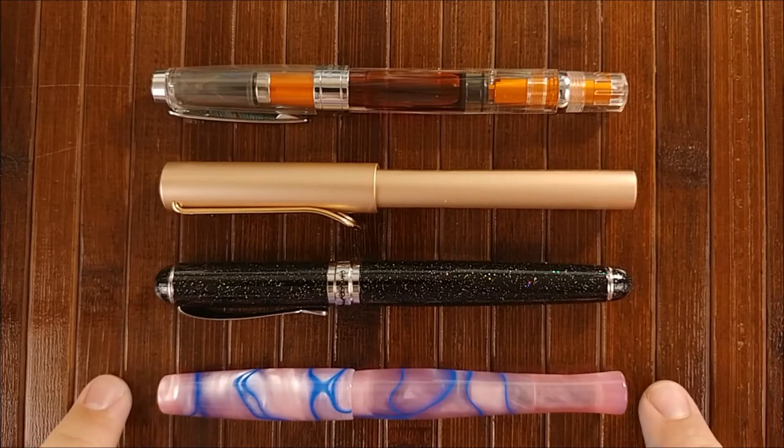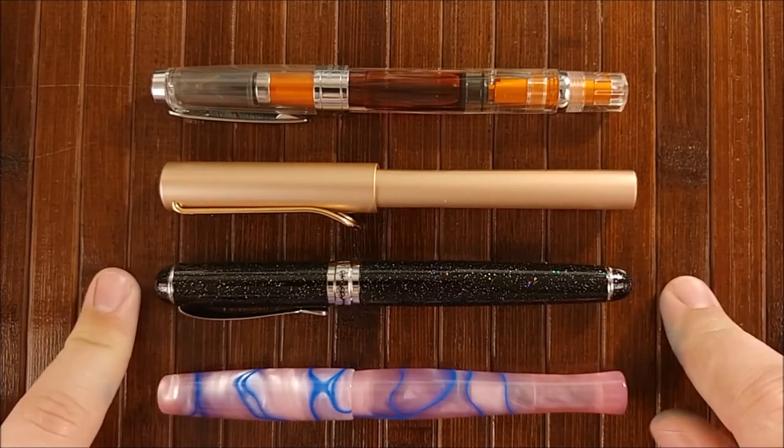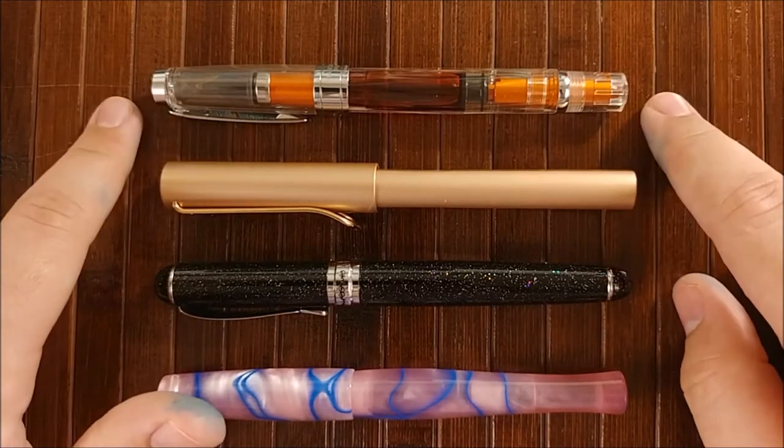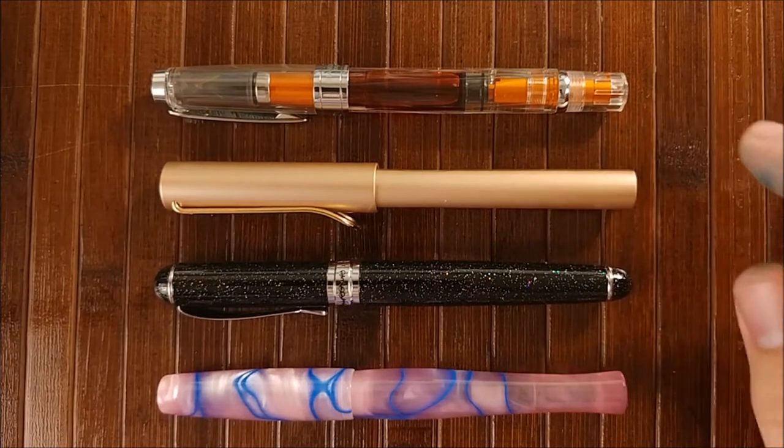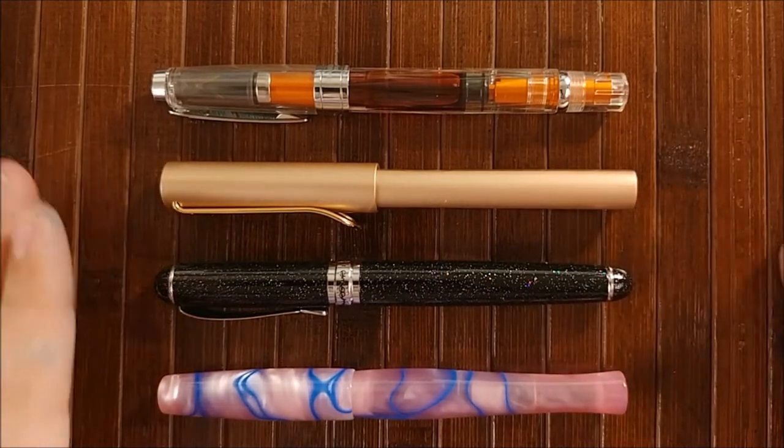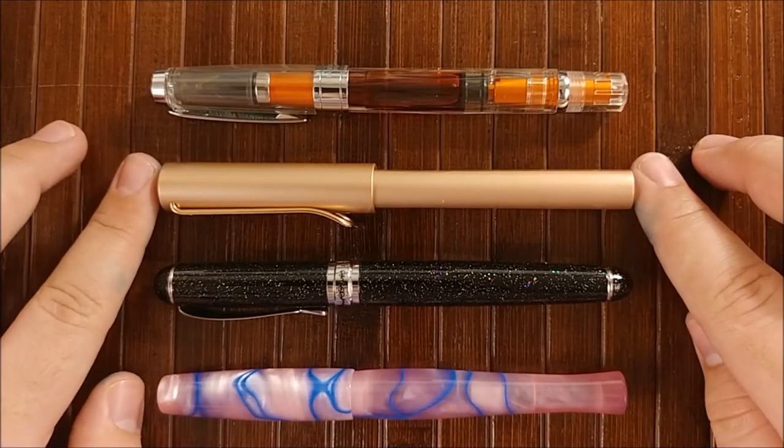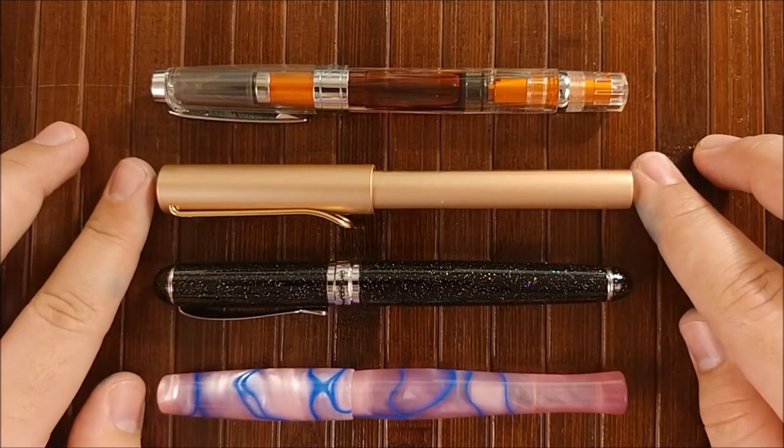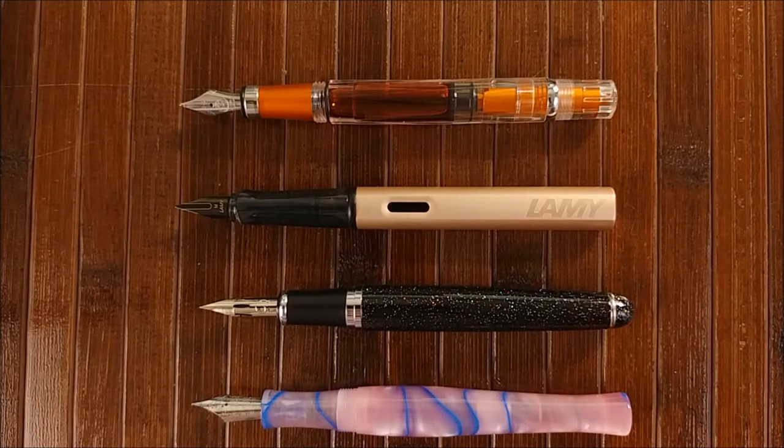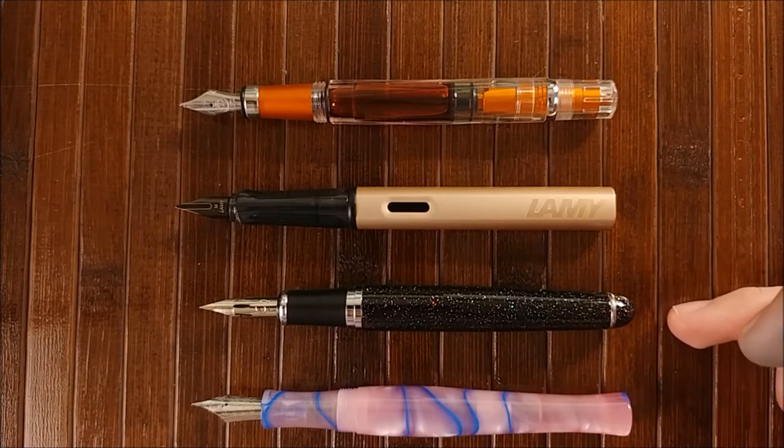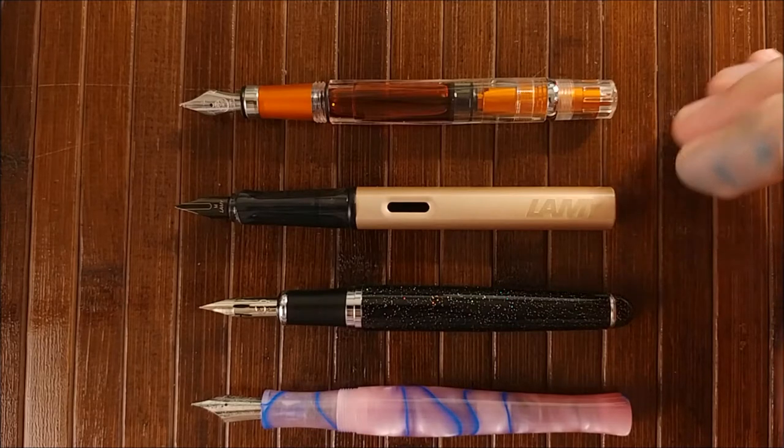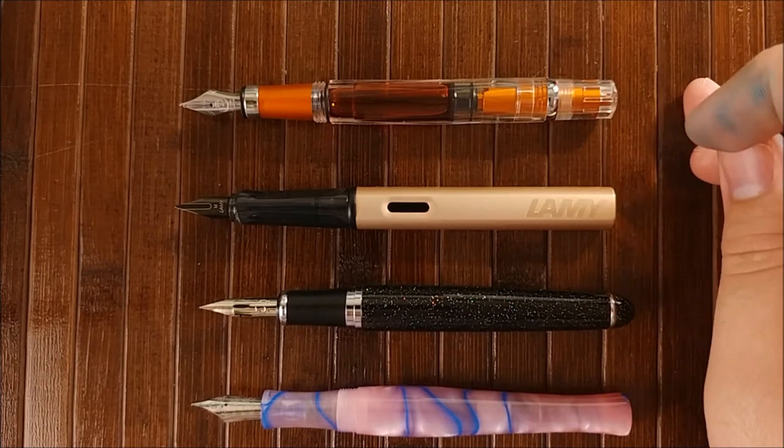So at the bottom here we have the Pen BBS 823, the Jinhao X750, the Lamy LX in rose gold, and the TWSBI 580 in lava. You can see it's in the same size range as these two. It is ever so slightly longer than the Lamy and slightly shorter than the TWSBI. Here's an uncapped comparison. So you can see it's longer than the Jinhao X750, slightly shorter than the Lamy, and just a touch shorter than the TWSBI 580.